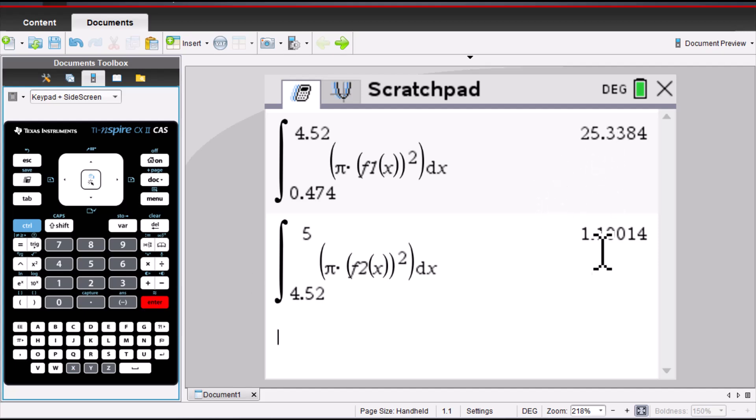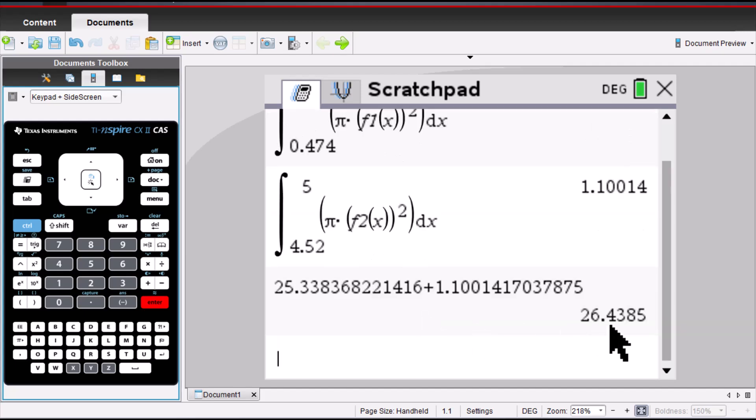By adding these two values together, we got the volume of the vase. 26.4 cubic units.